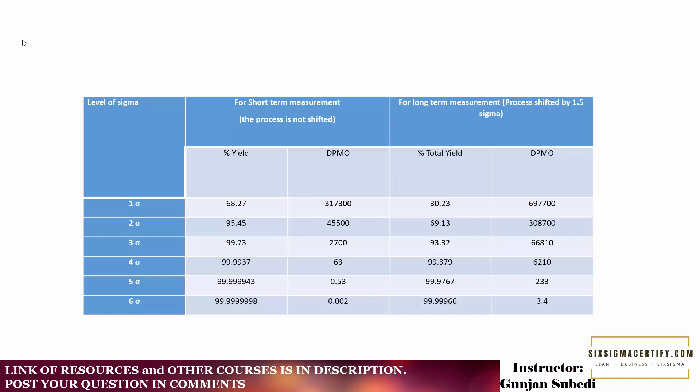The table for short term measurement and for the long term measurement. As you go on measuring a process for a long period of time, various sources of variations come into play. There may be variations due to seasonality, there may be variations due to cycle, or there may be other kinds of variation. And these variations ultimately can affect the total yield or increase the defects per million opportunities.